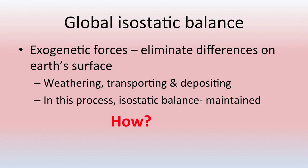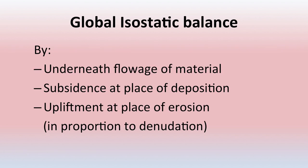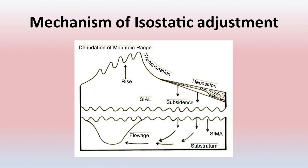The mechanism of global isostatic balance involves three processes: first, underneath flowage of material below the earth surface; second, subsidence at the place of deposition; and third, upliftment at the place of erosion in proportion to denudation. These are the three ways in which global isostatic balance is maintained, and the mechanism can be seen in the picture showing transportation, deposition, erosion, and flowage of material inside the SEMA.